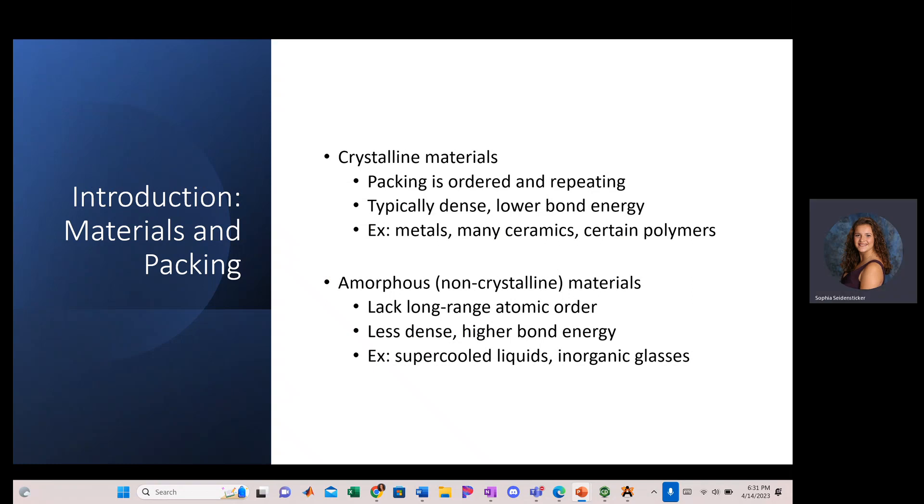Atoms arrange into solid structures. The way that these atoms arrange determines the type of structure. Crystalline materials have ordered packing. These atoms are assembled in repeating patterns. These materials are typically dense and have lower bond energies. Examples of crystalline materials include metals, many ceramics, and certain polymers.